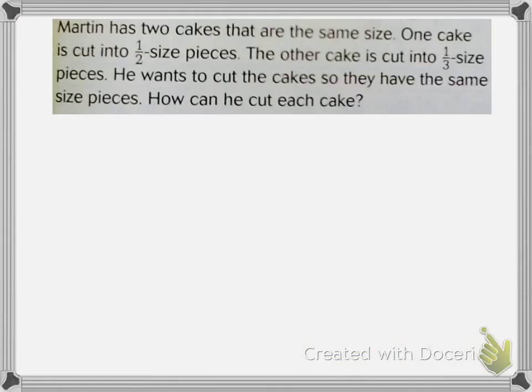All right, we have a word problem here. Martin has two cakes that are the same size. One cake is cut into half-sized pieces. The other cake is cut into one-third-sized pieces. He wants to cut the cakes so that they have the same size pieces. How can he cut each cake? So let's see here. Martin has two cakes. One is cut into half-sized pieces, the other into one-third-sized pieces. Let's think about what denominators mean.